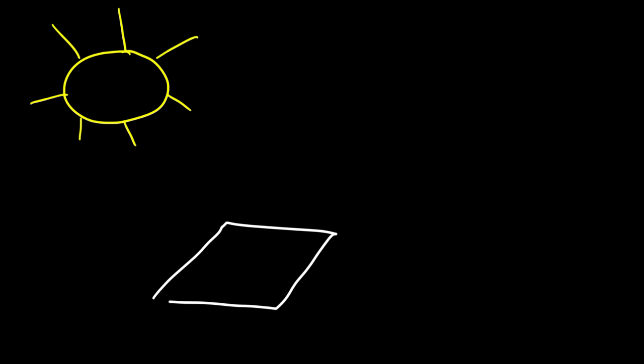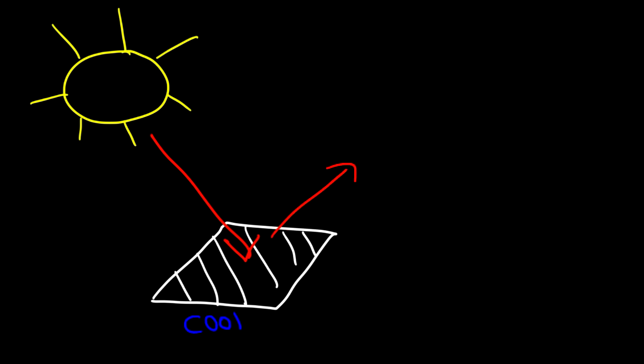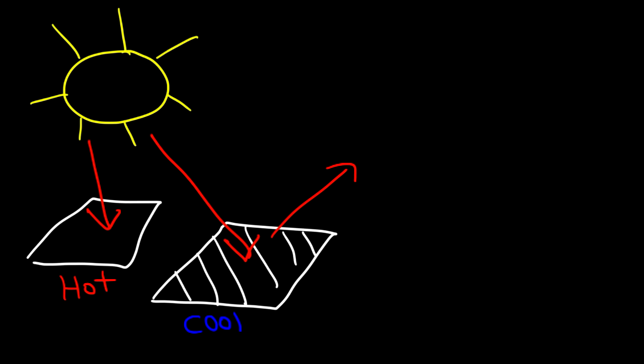There's one more thing to cover: how certain materials react to electromagnetic radiation. A white object placed in front of the sun will reflect a lot of the electromagnetic radiation and stay cool. A black object, on the other hand, absorbs most of the sun's radiation and gets hot. That's why in summer it's a good idea to wear light-colored clothing — a white shirt keeps you cool, while a black shirt heats up quickly in the sun. Black objects absorb radiation efficiently; light-colored objects reflect radiation efficiently.